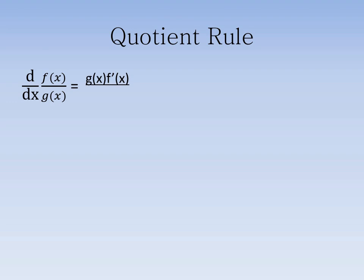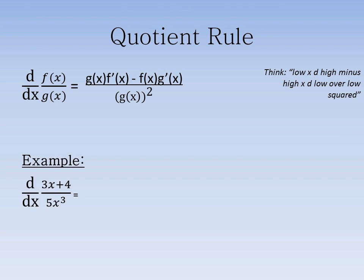This time we will then subtract from this the top function, multiplied by the derivative of g of x. Divide this by g of x squared. A way to remember these steps is through the expression low d high minus high d low over low squared. In this example, we have the numerator, 3x plus 4, divided by 5x cubed. Following our quotient rule steps, we note that we will multiply the denominator by the derivative of the numerator, which is 3,